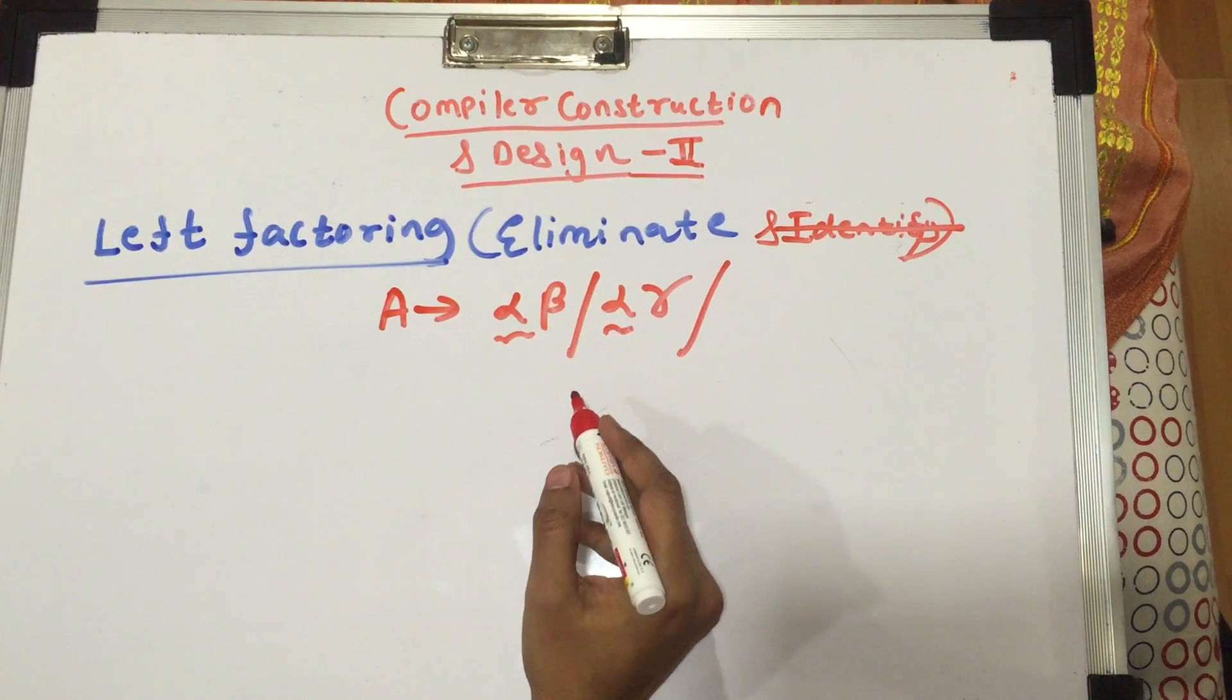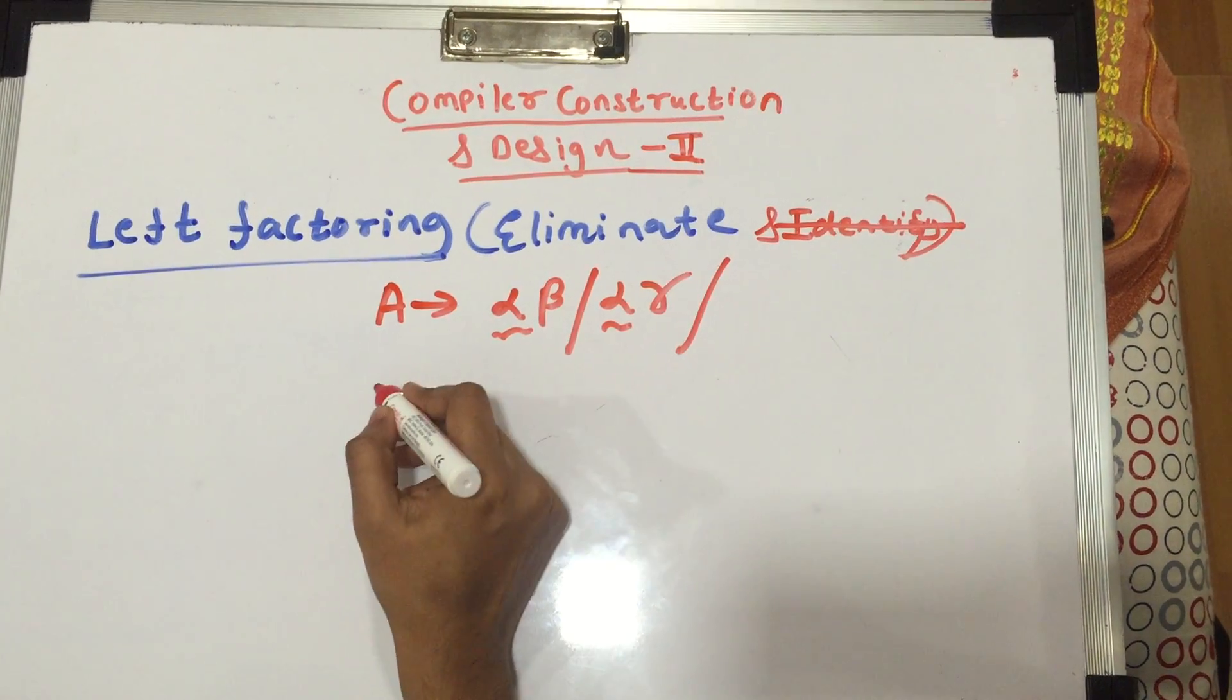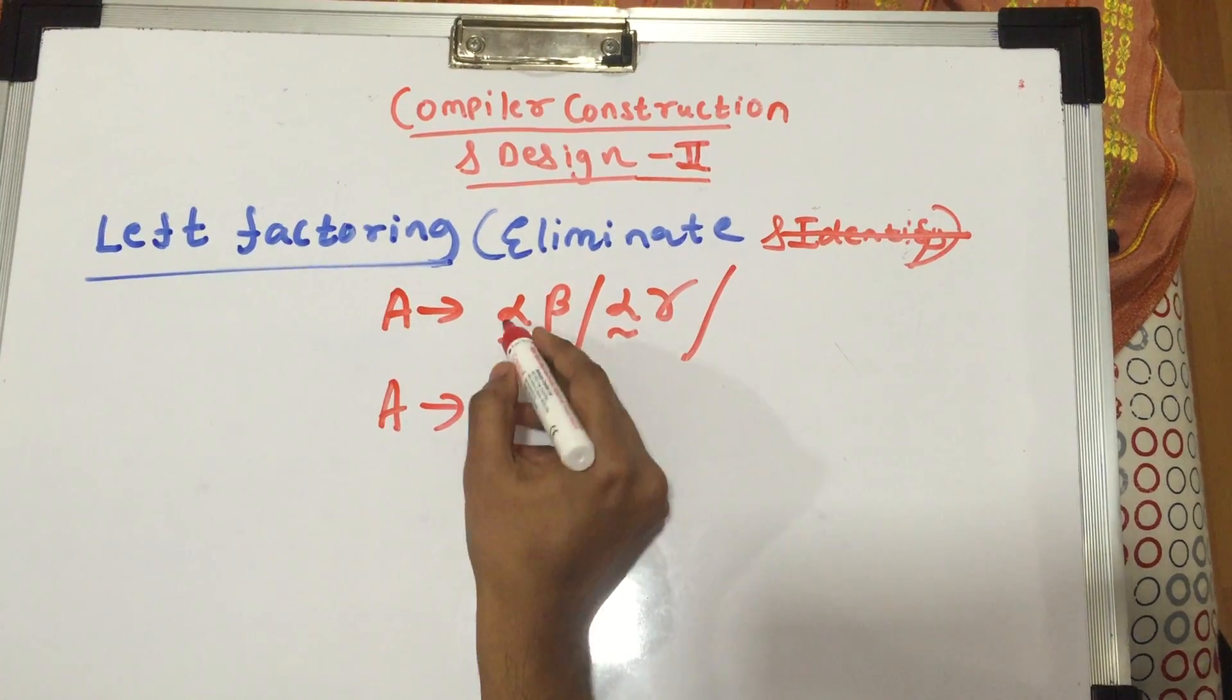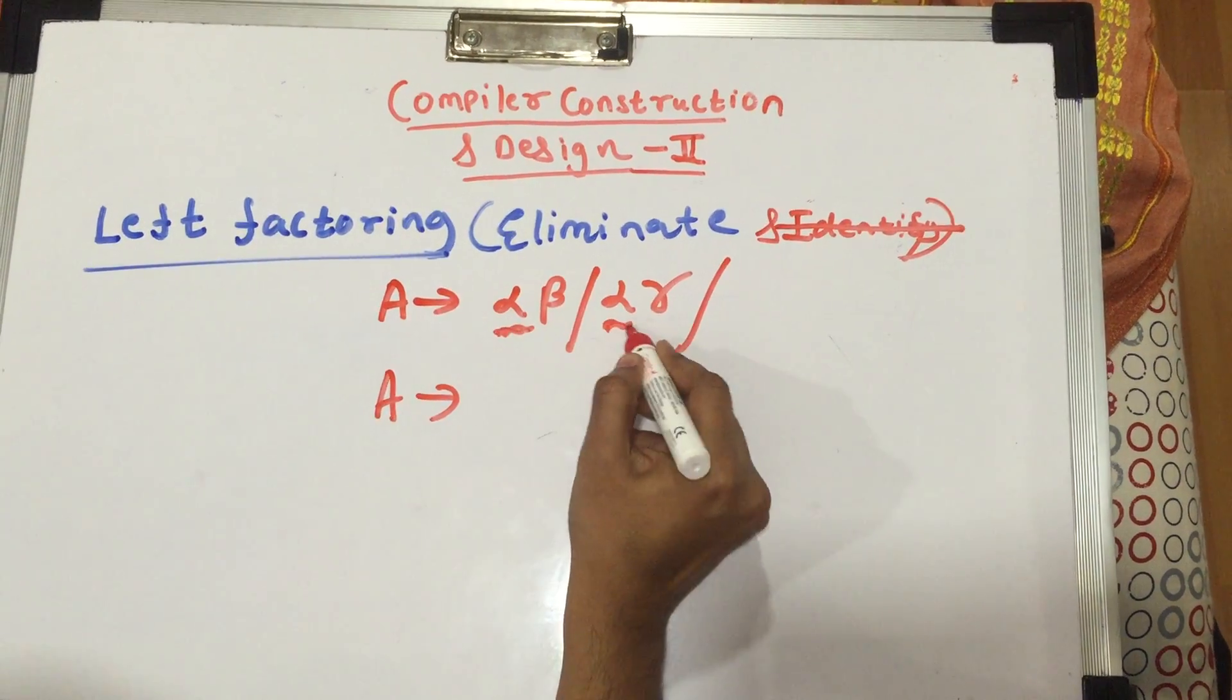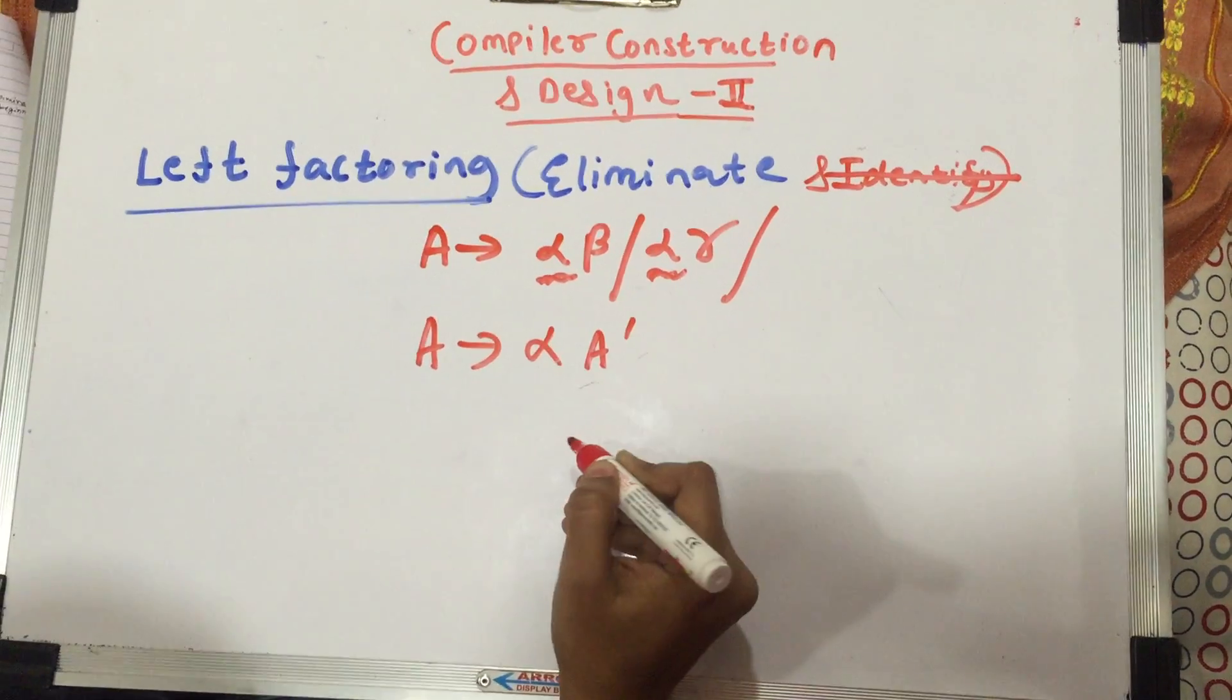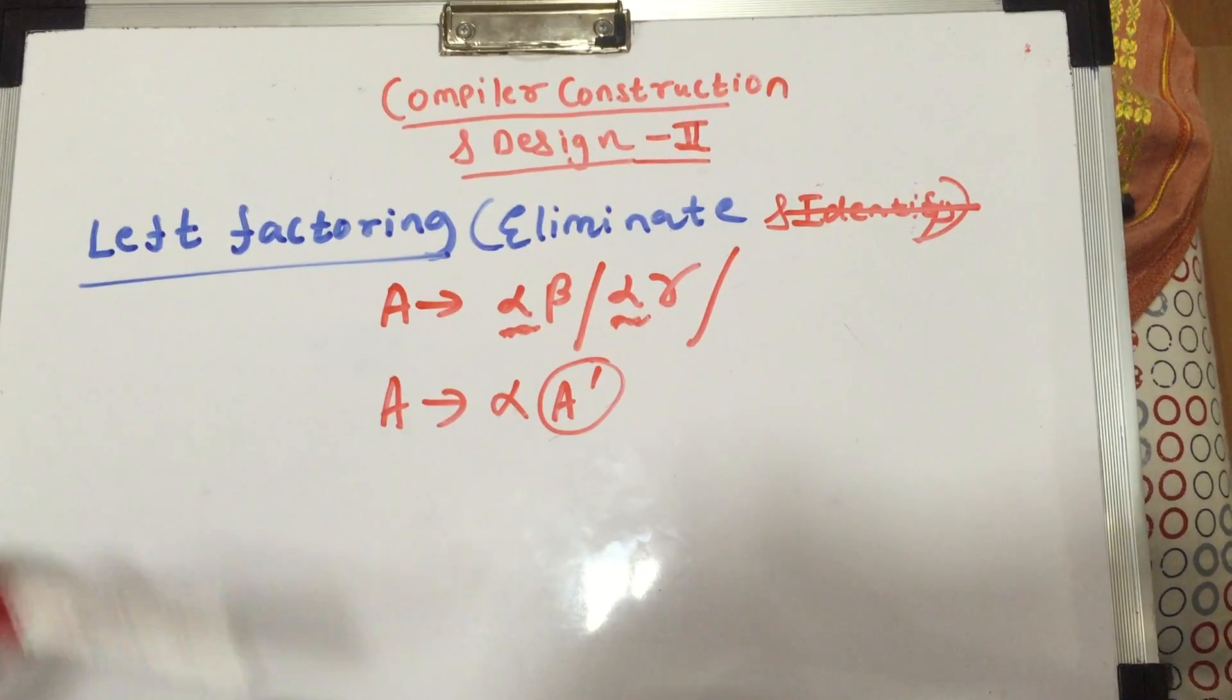On paper, like we did in the previous video, we'll see how we can eliminate it. Basically you take out this alpha common, so you write A gives you alpha A dash, and for A dash you define...